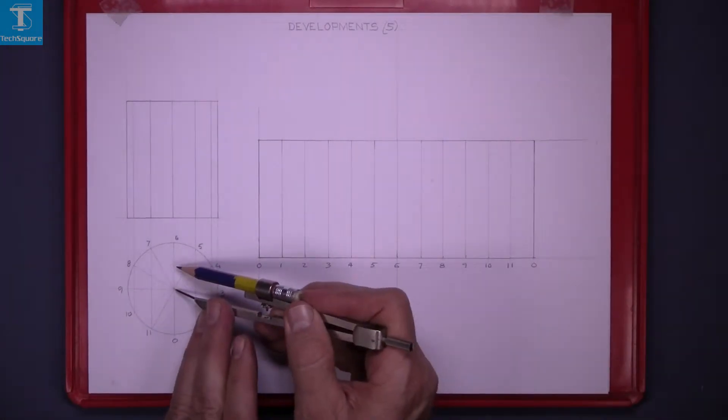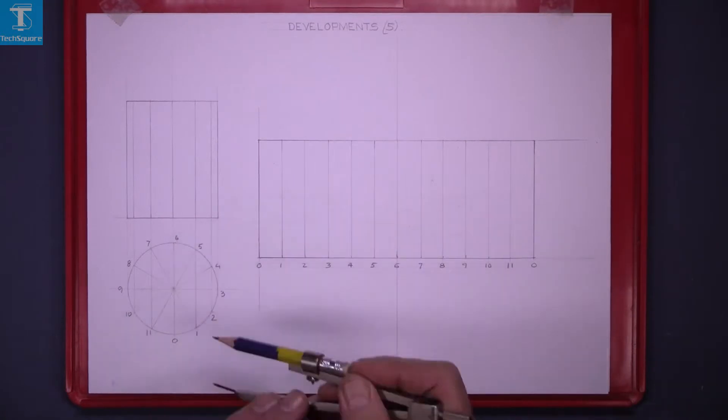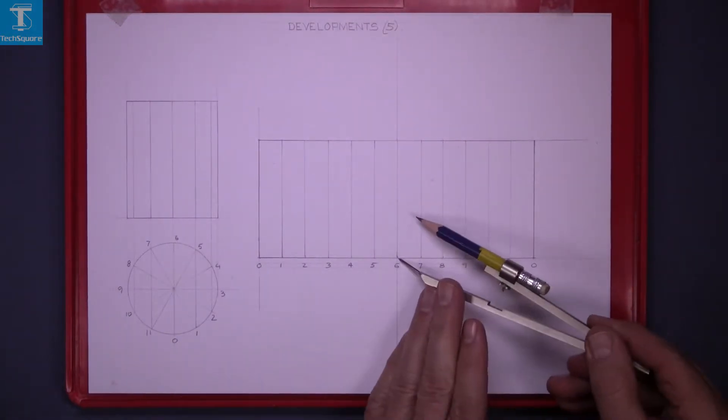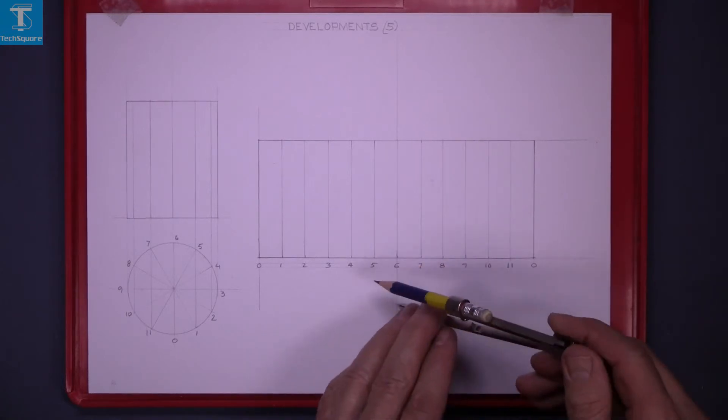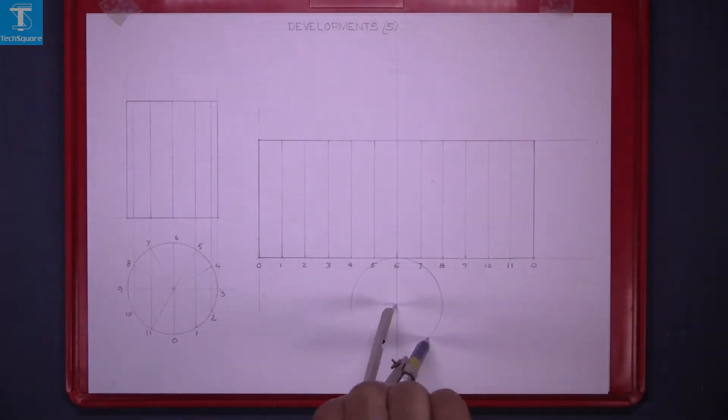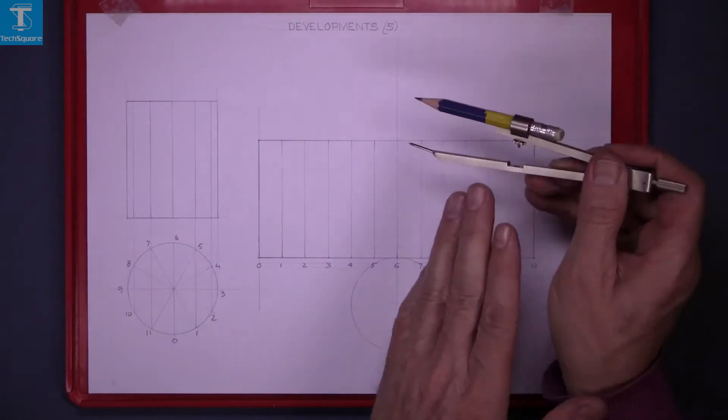Now to put the top and bottom on it, set the compass to the radius, mark out for the center and draw the circle. Do the same at the top.